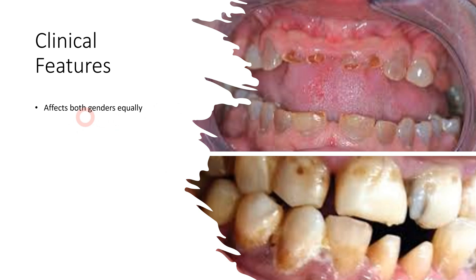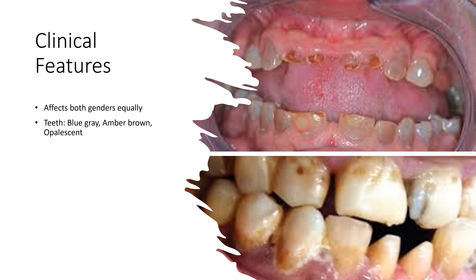The appearance of teeth is the most important thing to note clinically. The teeth are slightly bluish, grayish, amber, or brown — the term most commonly used is opalescent appearance. This opalescent appearance is the most commonly used term to describe the teeth of dentinogenesis imperfecta, along with attrition.